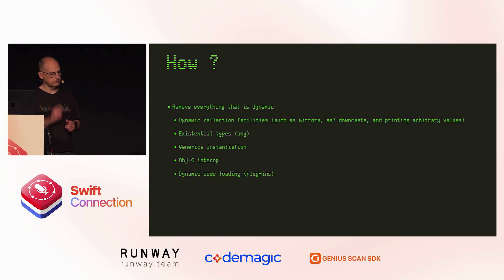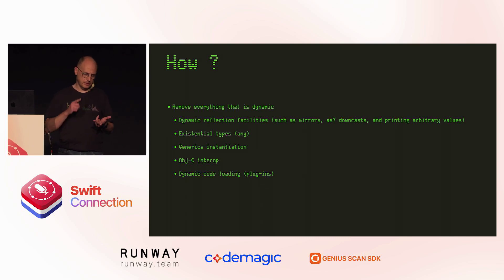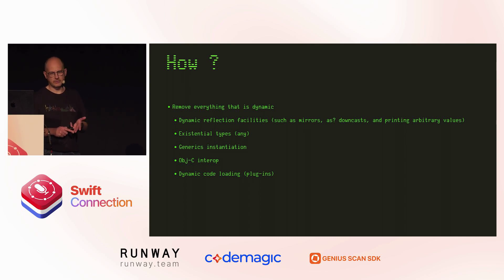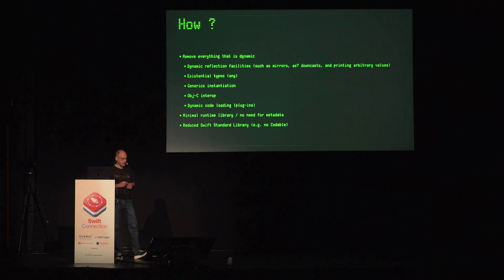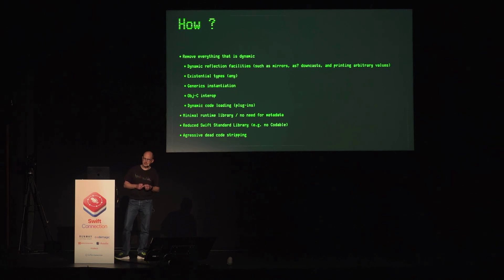How does it do it? It removes basically everything that's dynamic: no dynamic reflection, no existential types, no generic instantiation at runtime, and of course no interoperability with Objective-C, which requires a runtime. With that, we get a minimal runtime library mainly concerned about memory management. We don't need to include metadata about the types — no runtime, no metadata required. It also uses a reduced Swift standard library, so for instance Codable is not available. And it does aggressive dead code stripping, bundling only the code required for execution.